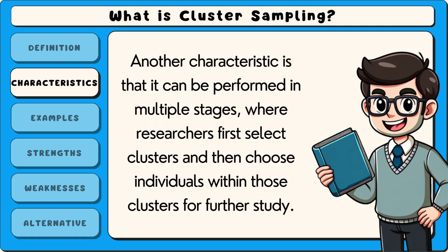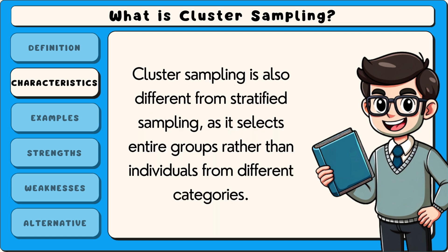Another characteristic is that it can be performed in multiple stages, where researchers first select clusters and then choose individuals within those clusters for further study. Cluster sampling is also different from stratified sampling, as it selects entire groups rather than individuals from different categories.